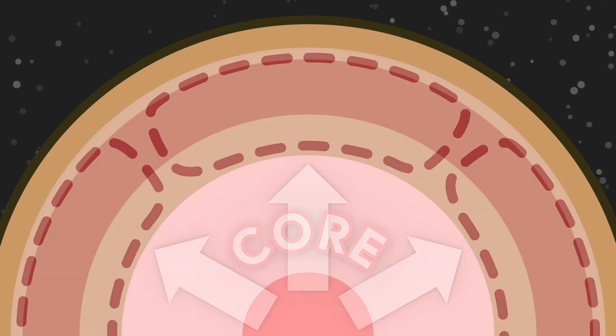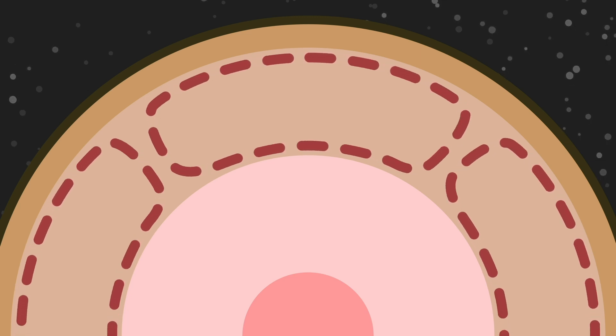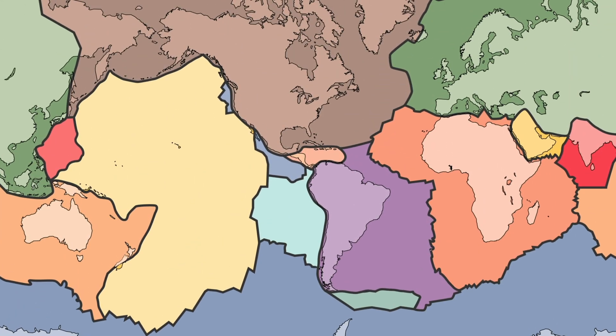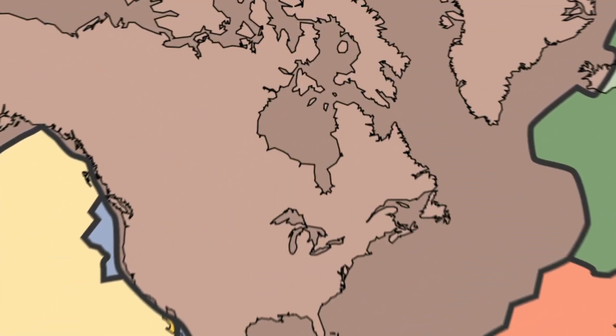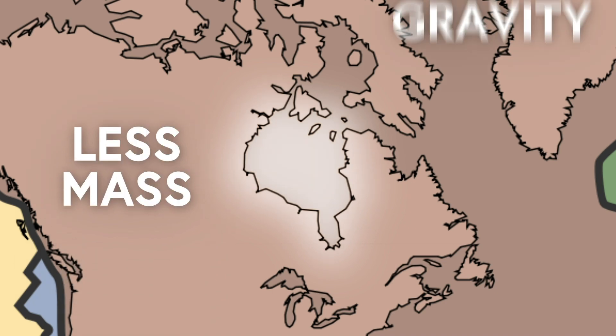So it creates a current that looks like this that goes around and around like a giant terrifying hot magma merry-go-round. The convection current can pull down the earth's tectonic plates. If the tectonic plates are pulled down in an area, like Hudson Bay, there's less mass below you and therefore less gravity.